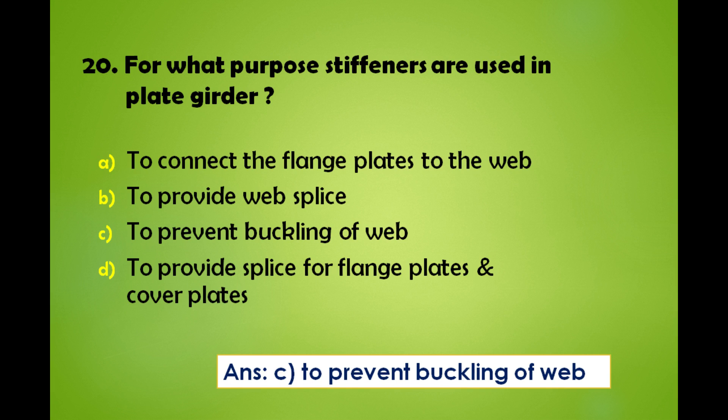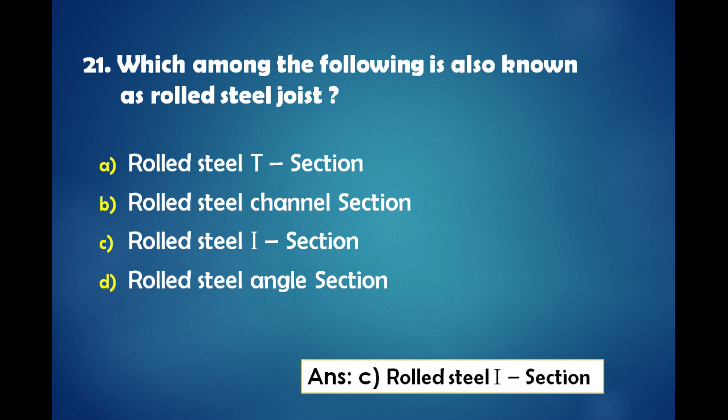For what purpose are stiffeners used in plate girders? A) To connect the flange plates to the web, B) To provide web splice, C) To prevent buckling of the web, D) To provide splice for flange plates and cover plates. The answer is: stiffeners are used in plate girders to prevent buckling of the web.